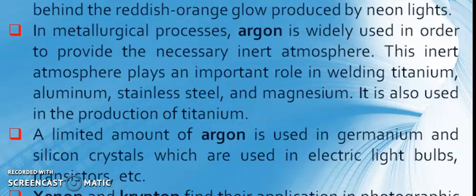You know my friend, Neon is used in discharge tubes, which is the reason behind the reddish-orange glow produced by Neon. In metallurgical processes, Argon is widely used in order to provide the necessary inert atmosphere. This inert atmosphere plays an important role in melting titanium, aluminum, stainless steel, and magnesium. It is also used in the production of titanium. A limited amount of Argon is used in germanium and silicon crystals, which are used in electric light bulbs and transistors.